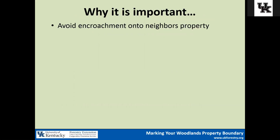Why is it important? There are a variety of reasons to mark your property boundary. One of the first is it helps avoid encroachment onto a neighbor's property. If you've clearly marked your property boundary, you know where your property ends and your neighbor's begins. So in case you're doing forest management activities — timber harvesting or timber stand improvement — this ensures that whoever you have doing your forest management practices stays on your property and there won't be accidental trespass onto your neighbor's property, which keeps happy neighbors.